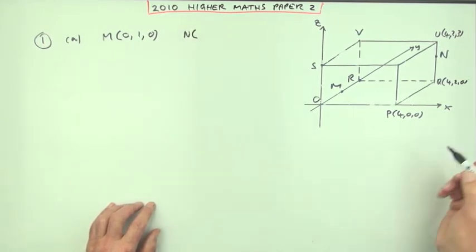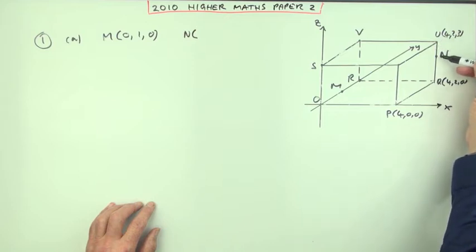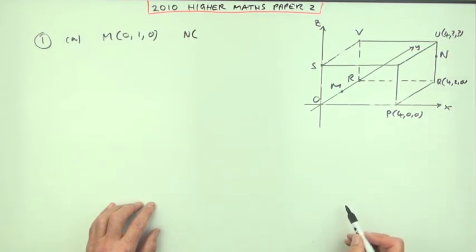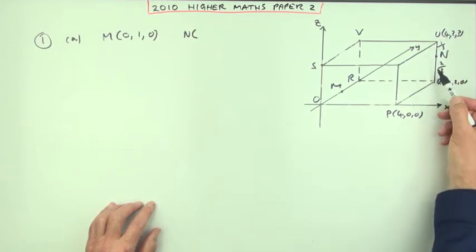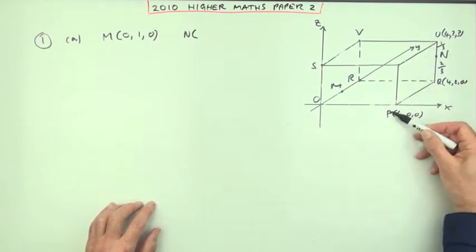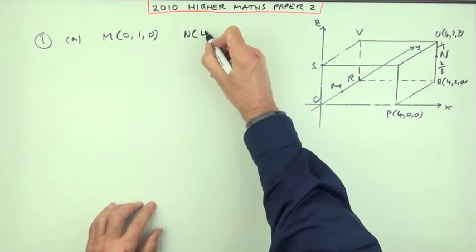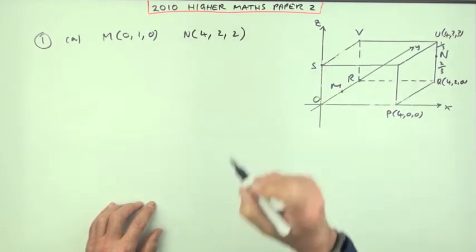N. The question said that UN was a third of UQ. Well, the other way around that means that this is, if that part's one third, this will be two thirds. But there's three parts altogether, so it's two up. Four along, two back, two up. Four, two, two, and there's your marks.